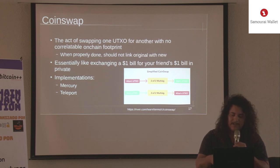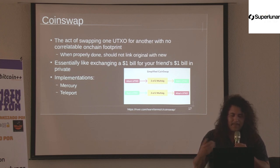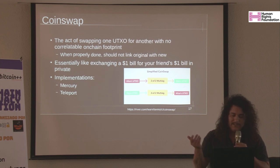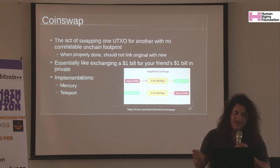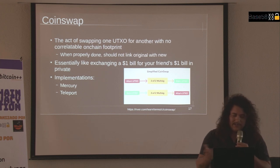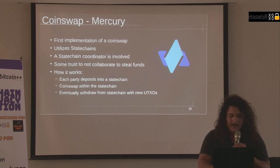Using some cryptography, you go into a two-of-two multisig. Alice's UTXO looks like it's going into a normal two-of-two multisig, there's another transaction that occurs, and then Bob now owns that UTXO. Same on Bob's side — Alice owns his UTXO, and they should be the same amounts. It's like swapping dollar bills — in theory you could track serial numbers, but in practice you just swap and no one tracks it. Mercury was pretty much the first implementation of CoinSwaps.